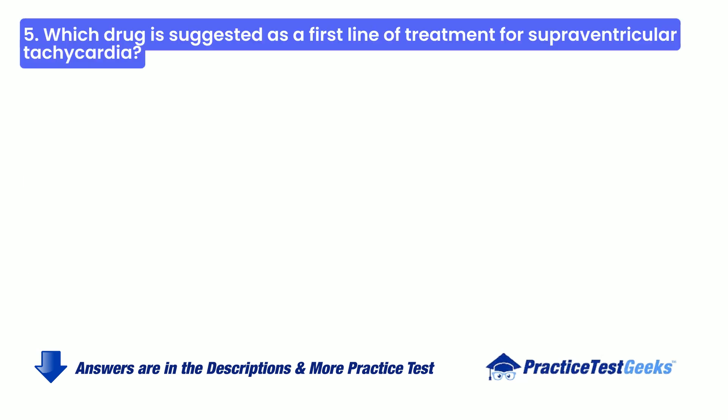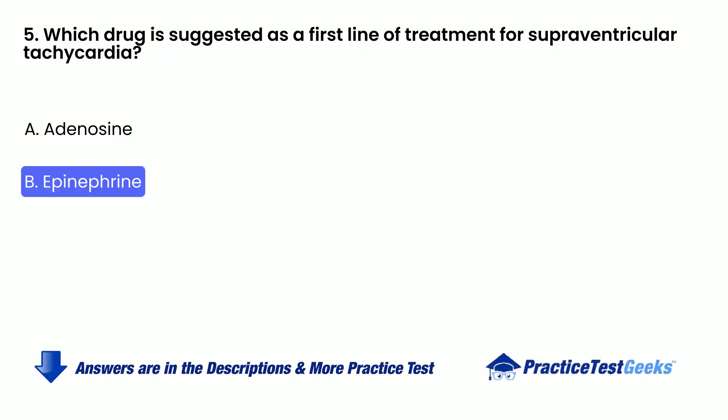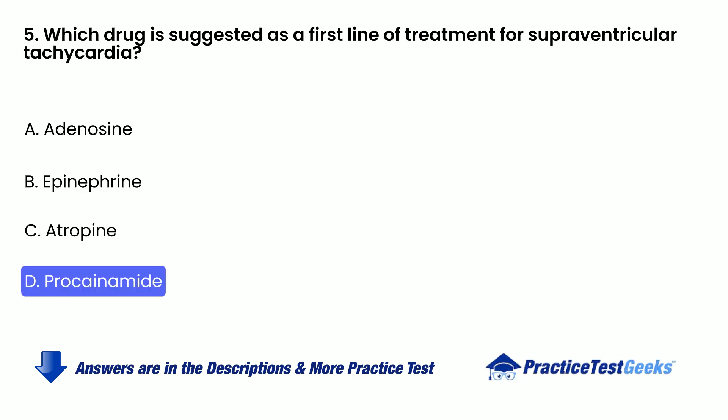Which drug is suggested as a first line of treatment for supraventricular tachycardia? A. Adenosine. B. Epinephrine. C. Atropine. D. Procainamide.